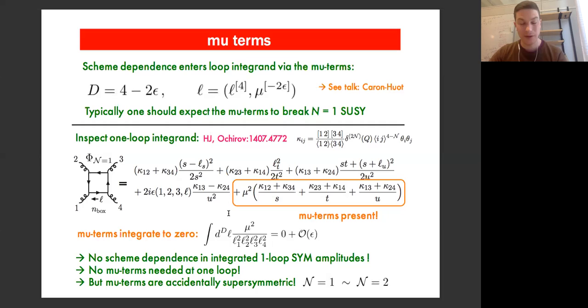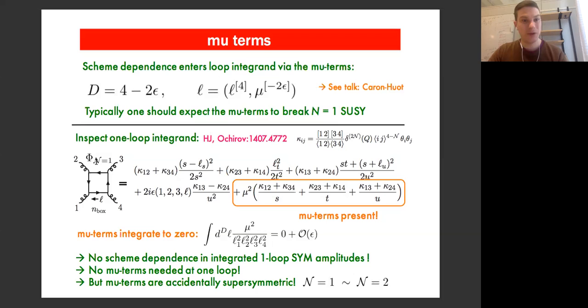The way we understand this problem in modern language is through mu terms — the extra-dimensional piece of the loop momentum, as we saw in Simone's talk yesterday. Whenever you encounter these extra-dimensional pieces of your loop momentum, you should expect them to break supersymmetry. So let's inspect some loop amplitudes to see whether this is true.